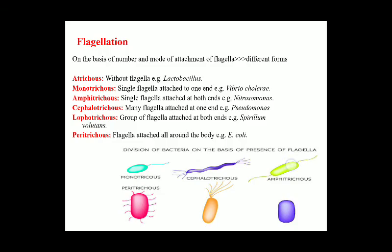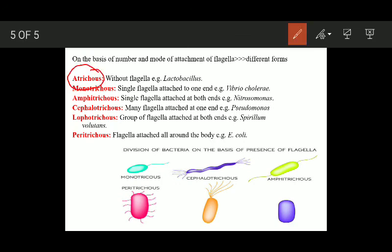Now, the pattern of flagellation in bacteria: on the basis of number and mode of attachment of flagella — flagella are the organs that help bacteria move from one place to another. Based on where they are attached, we have different types of flagellation. The first one is atrichous bacteria — those bacteria that do not possess any flagella on their body surface. An example is Lactobacillus.